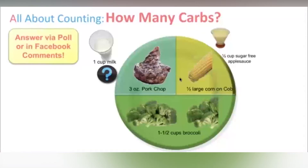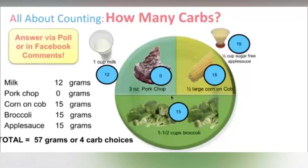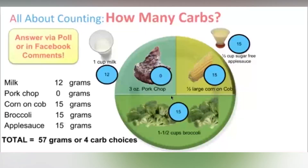A cup of milk: about 12 to 15 grams. Pork chop: none. Corn on the cob: about 15 grams. Broccoli — that's a pretty good size — 15 grams of carb. Half a cup of sugar-free applesauce: 15 grams. So the total is 57 grams, or four carb choices. One of us got the answer right! Nobody was too far off — about 60 grams, 57 grams, or four carb choices/four servings.